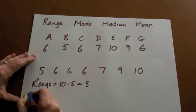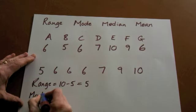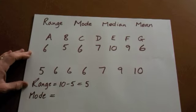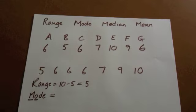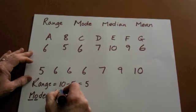The mode. Mode is the one that happens most often. So which number comes more than any other? Obviously that's six.